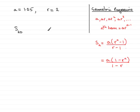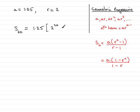So this is straightforward. All you've got to do is literally substitute these values into the formula. We've got 1.25 multiplied by the common ratio, which is 2, all to the power 20, then minus 1, and that's all divided by the common ratio minus 1 — that is, 2 minus 1.